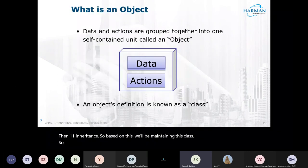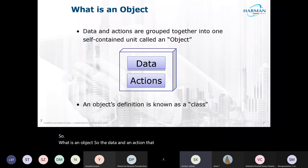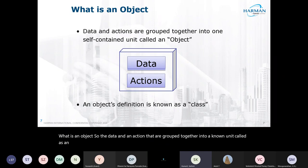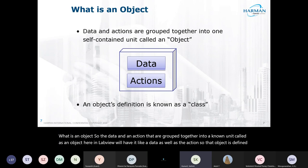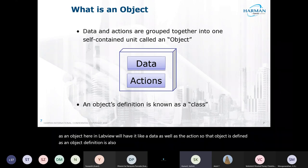What is an object? The data and actions that are grouped together into a single unit are called an object. In LabVIEW you will have data as well as actions. That object definition is also known as a class.